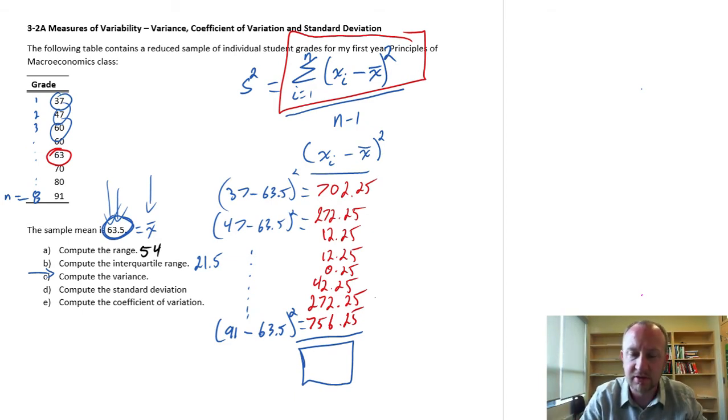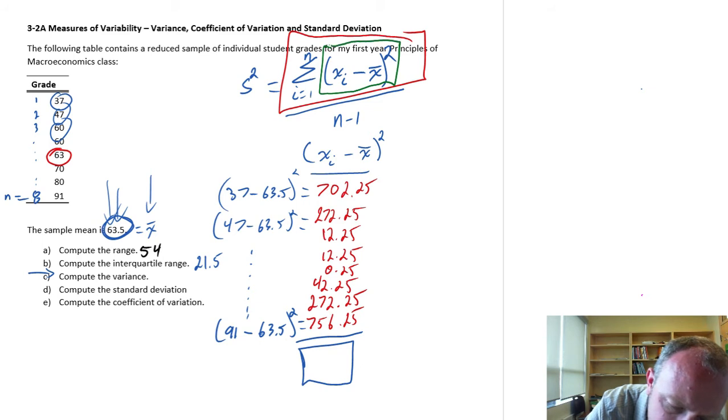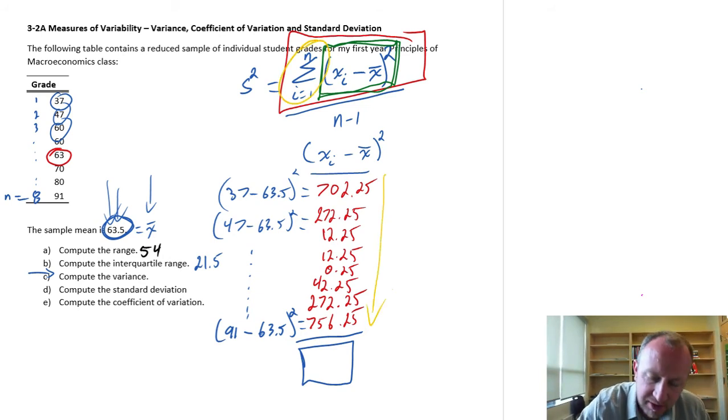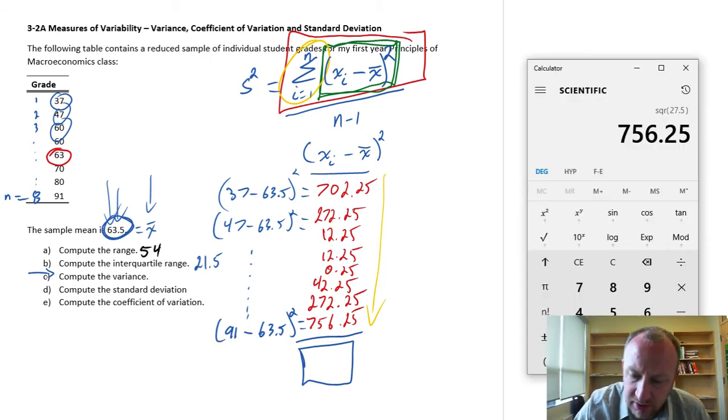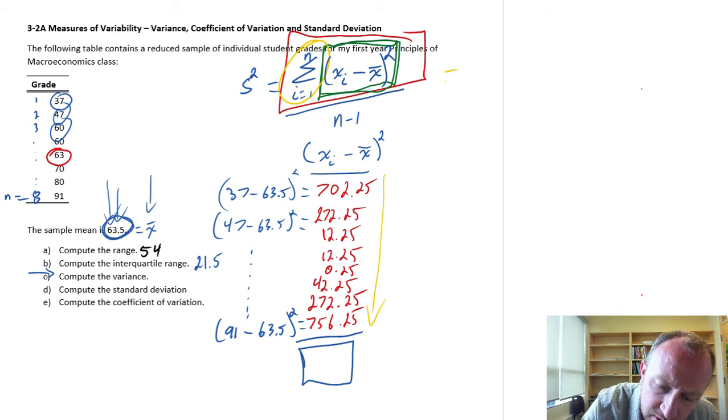So there we have all of those differences squared. So what we have here is really just the column. All of these pieces here. Now we have to add them up. So now we have to apply this piece of notation. So we're going to add all of these up. Going down the column. So this is going to be, let's start at the top. 702.25 plus 272 plus 12... So there's our numerator, 2070. So we now have 2070 divided by, this is 8 minus 1. So that will be 7.